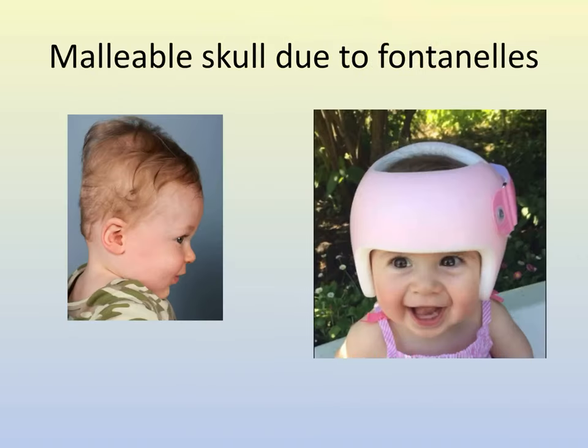These are some pictures of how malleable the skulls of babies and toddlers are. This baby was put to sleep on his back night after night, and just the pressure of his head resting on the mattress is enough to move the bones and create a flat region. Doctors may prescribe a helmet so that the skull can maintain a round shape.